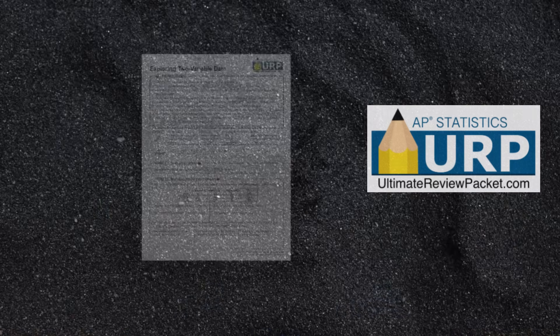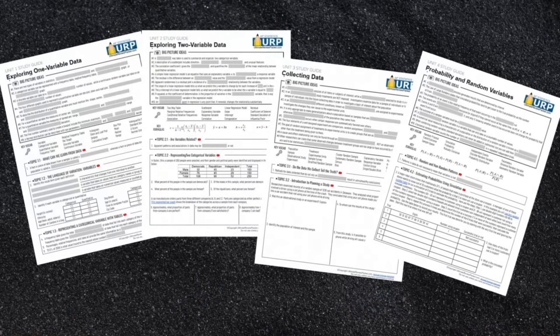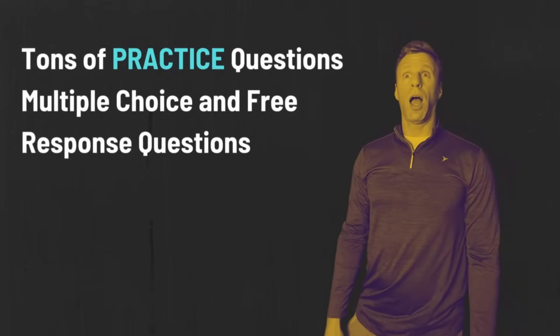If you want to do some extra studying after watching those videos, sign up for the ultimate review packet for AP statistics. It has study guides for every single unit with tons of practice problems that are identical to problems you're going to see on the AP statistics exam in May. The first couple of units of study guides are absolutely free — just sign up using the link in the description below. The ultimate review packet also has tons of practice free response questions exactly like what you're probably going to see on this year's exam. The more practice you do, the better you'll be when you open up that exam.